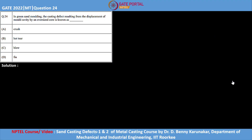This is question number 24 of GATE 2022 metallurgical engineering. In green sand molding, the casting defect resulting from the displacement of mold cavity by an oversized core is known as - options are crush, hot tear, blow, and fin. You can also refer to NPTEL lectures on sand casting defect parts 1 and 2, which come under the metal casting course by Dr. D. Benny Karunakar from the Department of Mechanical and Industrial Engineering, IIT Roorkee.